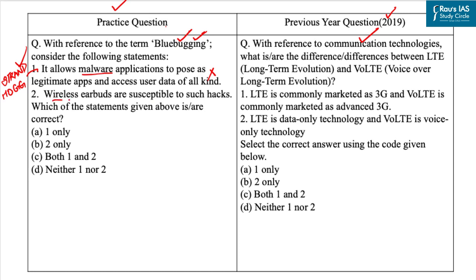The second statement is: wireless earbuds are susceptible to such hacks. This statement is correct, as any Bluetooth-enabled device can be blue-bugged. Apps that enable users to connect to their True Wireless Stereo (TWS) devices or earbuds can record conversations. Once hacked, the attacker can make and listen to calls, read and send messages, and modify or steal contacts. So our correct answer is Option B, that is 2 only.